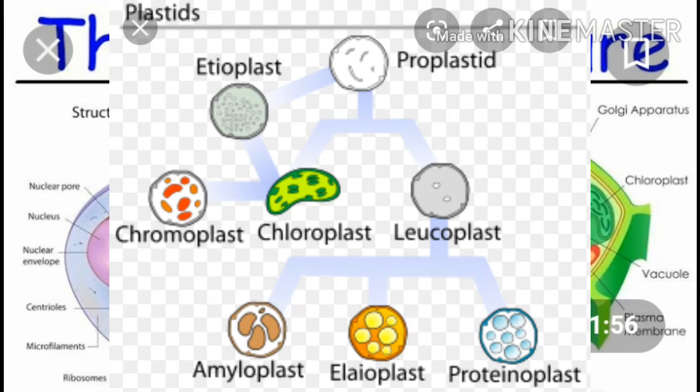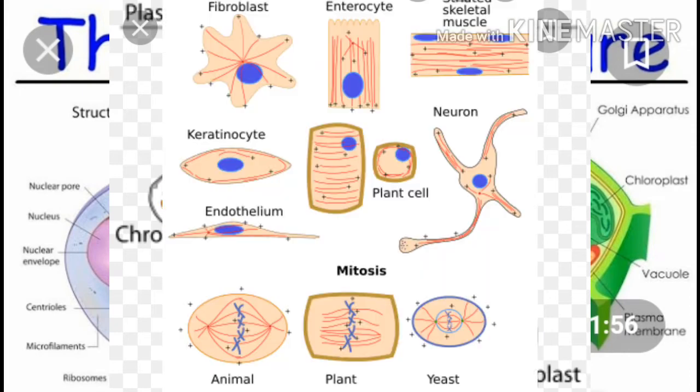During ripening of fruits, the color changes from green to yellow or reddish because of the degradation of chlorophyll and the carotene pigments take over.